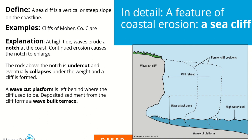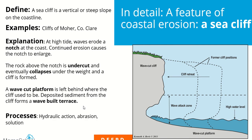Waves erode a notch on the coast; continued erosion causes the notch to enlarge and get deeper. The rock above the notch is undercut and eventually collapses, forming a cliff. A wave cut platform is left behind where the cliff used to be. Sometimes a deposit of sediment from the collapsed cliff builds up to form a wave-built terrace. The processes involved are hydraulic action, abrasion, and solution. We don't include attrition because attrition is rocks in the sea wearing each other down, not wearing the coastline itself down.